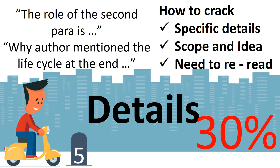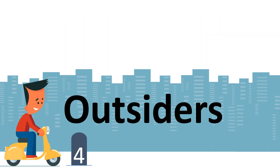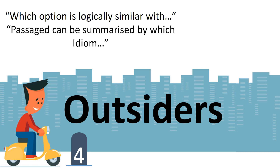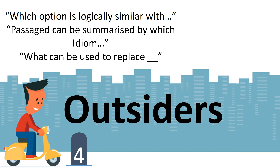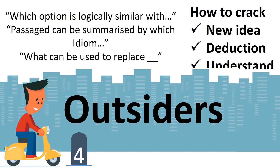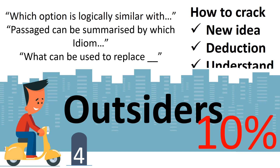This is the most common type of question — 30% of questions are going to be based on details. At number four we have the outsiders question, where the options are not related to the topic at all. For example: 'Which option is logically similar to the paragraph?' or 'The passage can be summarized by which of the following idioms?' or 'What can be used to replace this word?' The options are not going to be part of the paragraph, which makes it very tricky. To crack them, you have to understand a new idea and similarly find out another new idea, so your deduction and logical skills have to be very good. Almost 10% of questions are going to be based on outsiders.